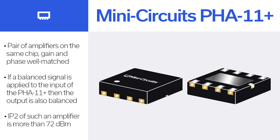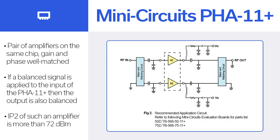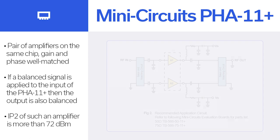As an example, MiniCircuits' PHA11 Plus consists of a pair of amplifiers. As they are on the same chip, their gain and phase are very well matched. If a balanced signal is applied to the input of PHA11 Plus, then the output is also balanced. By using a set of baluns at the input and output, a single-ended input is first converted into a balanced signal in T1, amplified in the PHA, and then combined in transformer T2 to produce a single-ended output. IP2 of such an amplifier is more than 72 dBm.